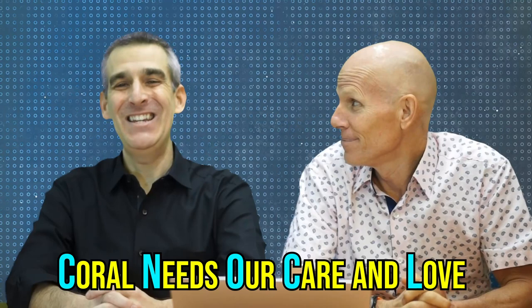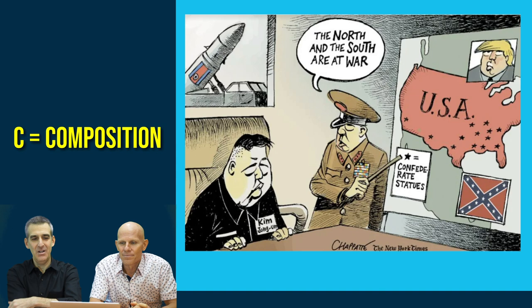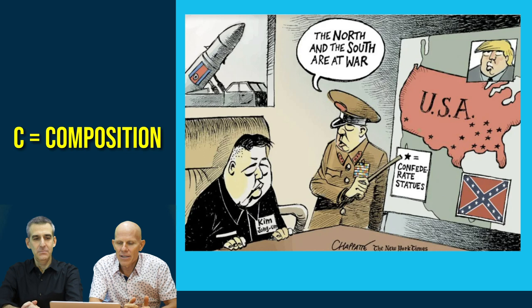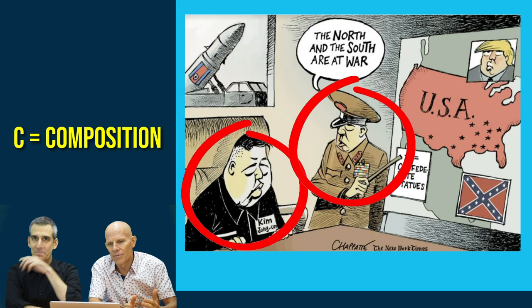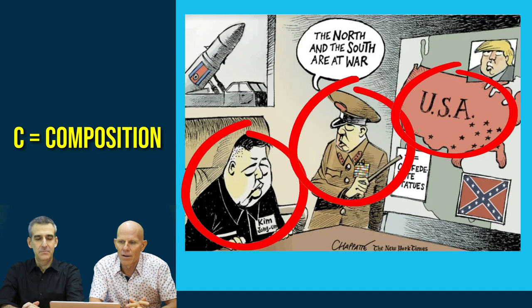In our previous video on cartoons, we offered a mnemonic: 'choral needs our care and love.' The C stands for composition. Looking at this cartoon, I'm thinking about what's in the foreground and background — I see Kim Jong-un sitting hunched at his desk, a general leading my eye to a map of the United States, and the graphic weight of the red colors pulling attention to that map. And of course, Donald Trump's hair is visible in the corner.